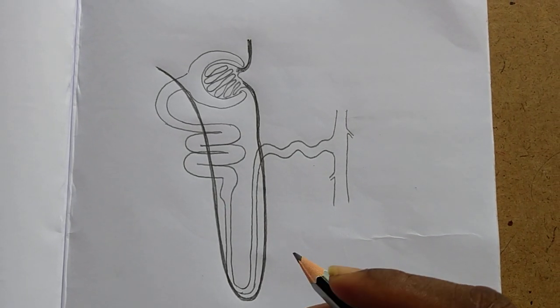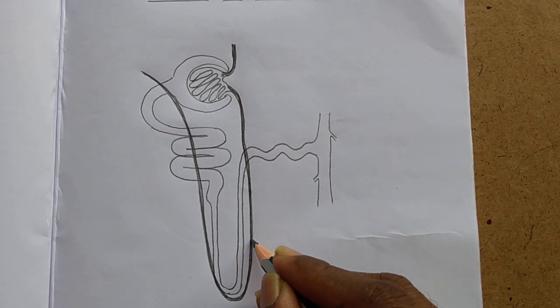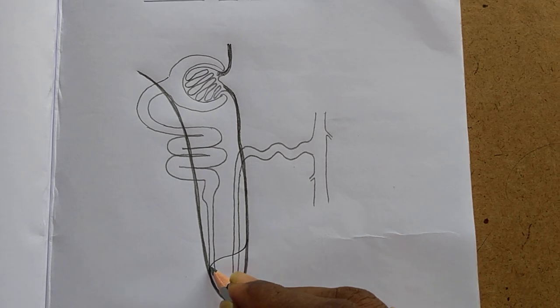Like this, we have to darken it and draw the peritubular network over this. We have to draw some links between these two lines.